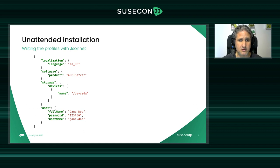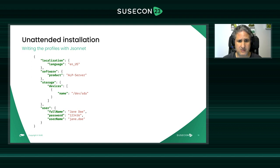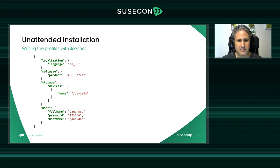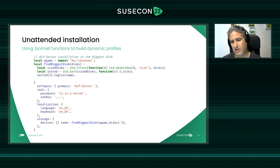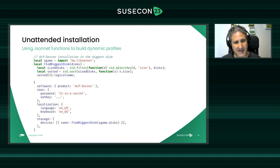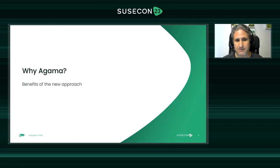Here is the JSONnet profile example. JSONnet is a superset of JSON, so any JSON document is valid JSONnet. The profile has sections for localization, software, and other installation aspects. For dynamic behavior — changing the profile at installation time — JSONnet offers a full programming language with a standard library. In this example, Agama injects hardware information into the profile and you can select the biggest disk to install onto, illustrating how dynamic content works.